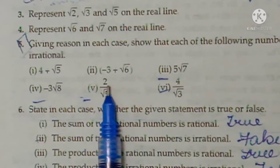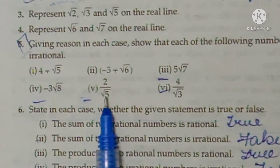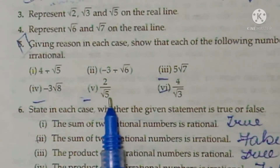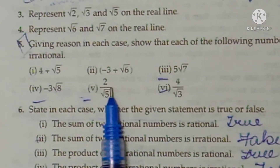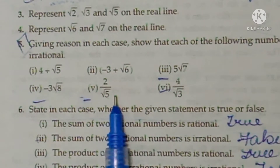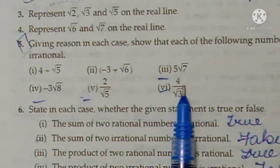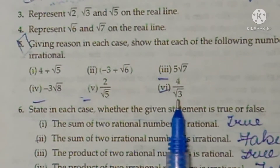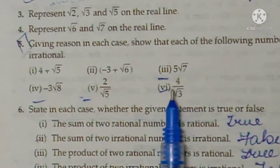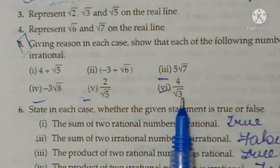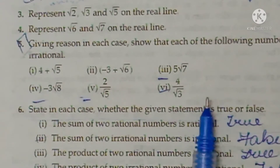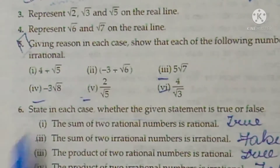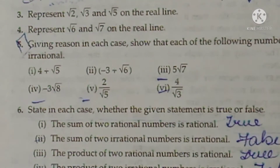Part five: 2 ÷ √5. Here 2 is a rational number and √5 is irrational. The quotient of a rational and an irrational number will be irrational. Part six: 4/√3. Here 4 is rational and √3 is irrational, so the quotient of a rational and irrational number is always irrational. Nothing needs to be solved here — only give reasons.